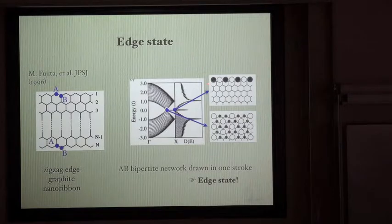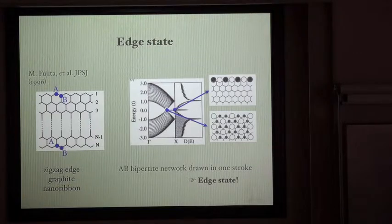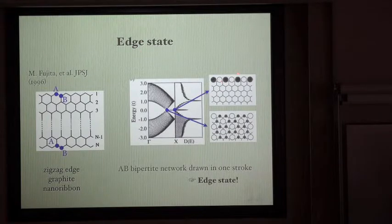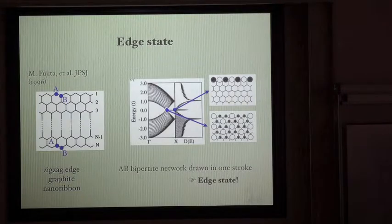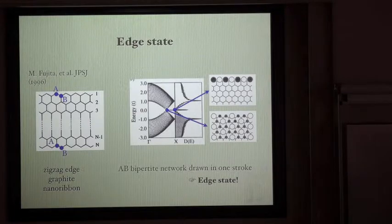According to the emergence of this flat dispersion band, graphite nanoribbons exhibit magnetic ordering. Along the edges, as we saw in Professor Luis's slide, spins are ferromagnetically aligned, and between the edges, the spin is antiferromagnetically coupled. I would like to emphasize that the edge state emerges not only on graphite ribbons but also in any network system classified as an AB bipartite system where the network is drawn in one stroke.